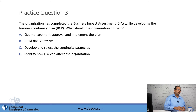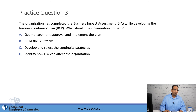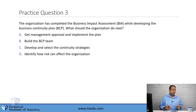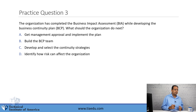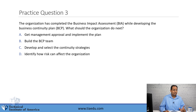Question number three: The organization has completed the business impact assessment while developing the business continuity plan. What should the organization do next? A, get management approval and implement the plan. B, build a BCP team. C, develop and select the continuity strategies. D, identify how risks can affect the organization.